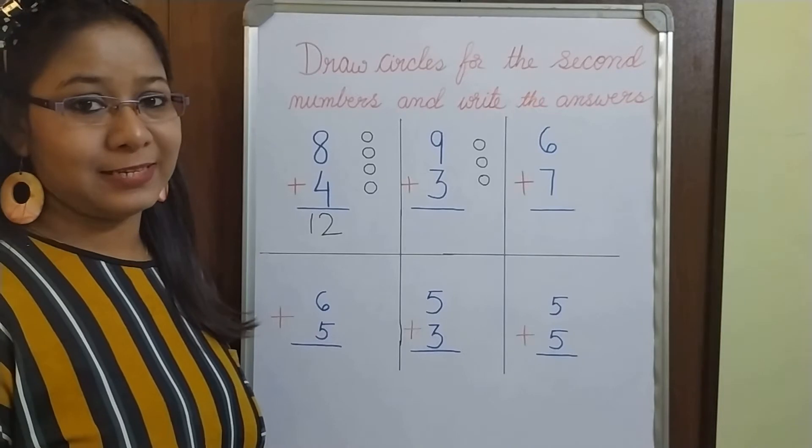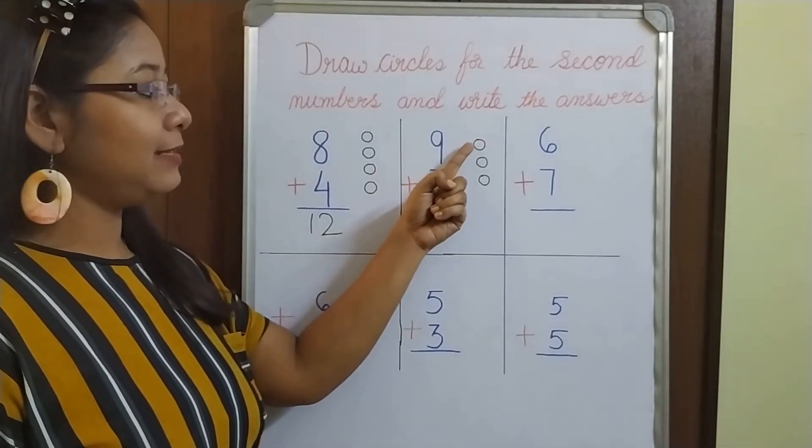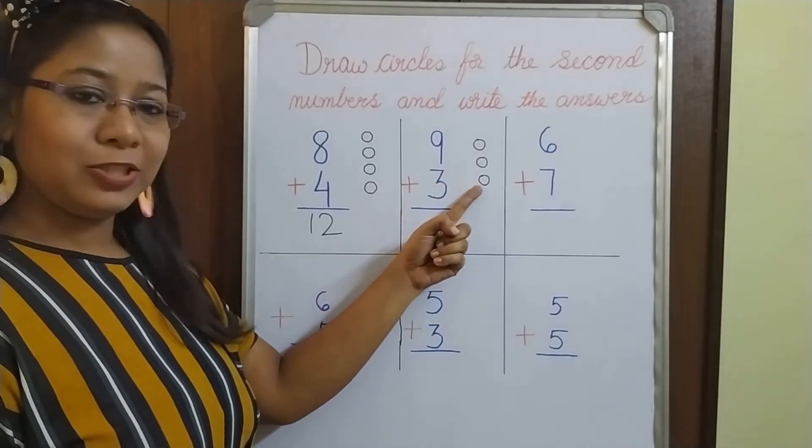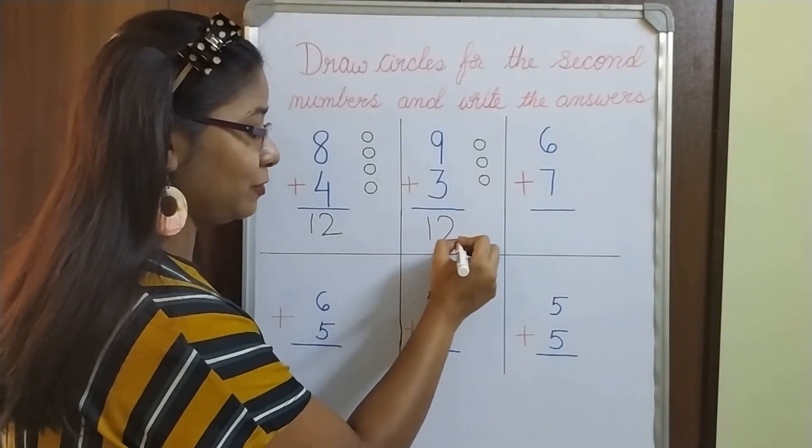And now it's time for counting. First number is 9. After 9, 10, 11, 12. Here also we have got the same answer, 12.